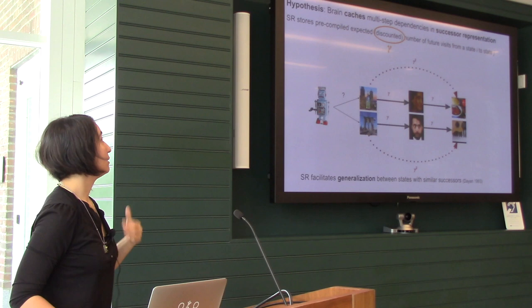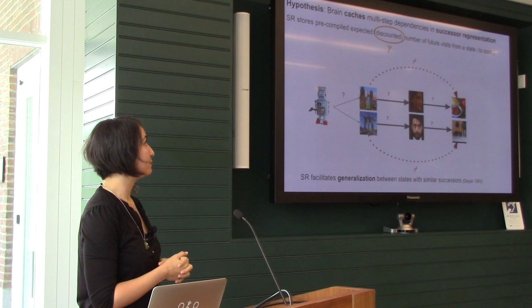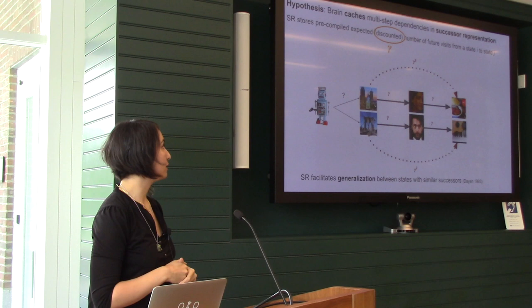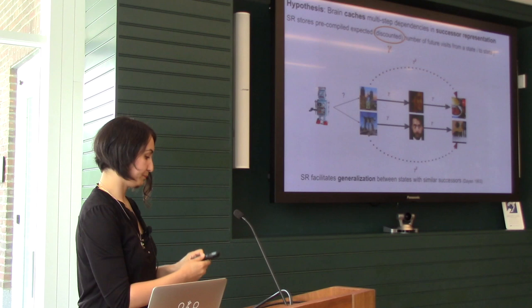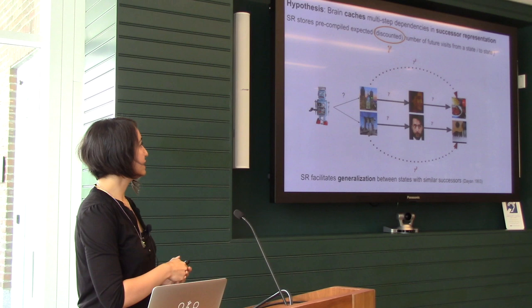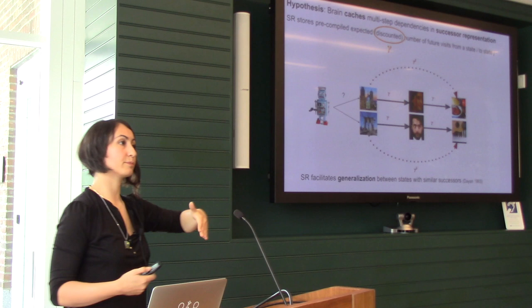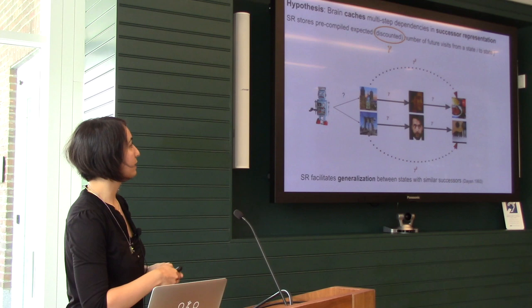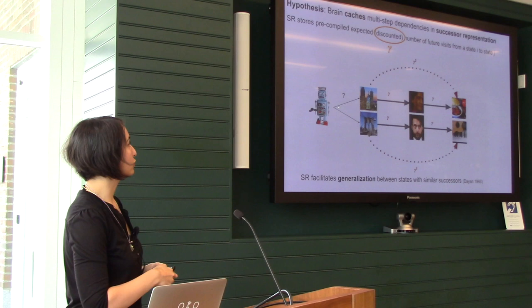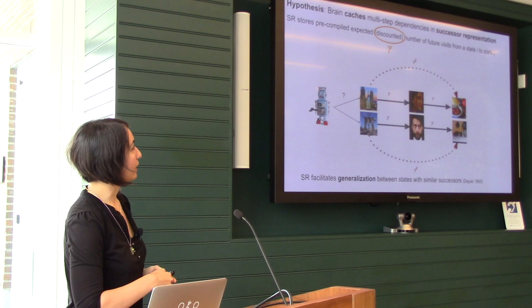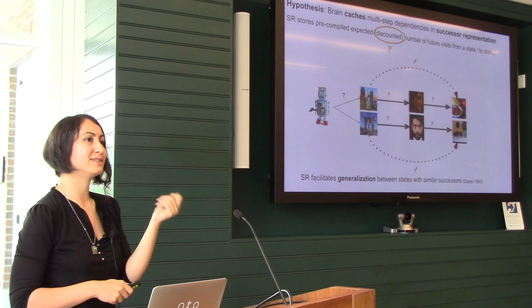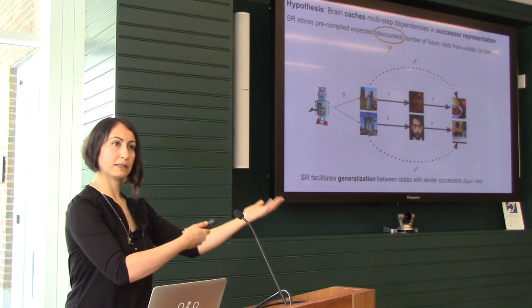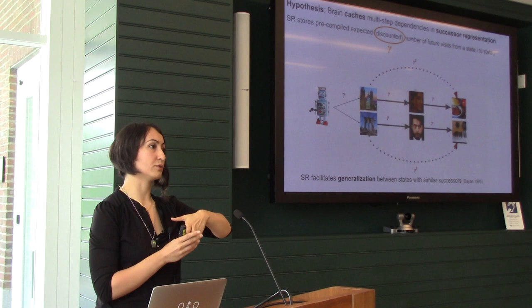The hypothesis we started with for these studies was: does the brain cache multi-step dependencies as in the successor representation? As you can see, there are these gammas — every step you have a little discount in terms of how similar the representations are to each other. When you have multi-steps away, this gamma gets multiplied. So if you build a reinforcement learning agent that needs to decide whether to go to Philly or Brooklyn, the further away a successor state is, the more discount you have. Gamma is between zero and one. And changing this gamma will be the scale of generalization or the scale of compression in your representations.